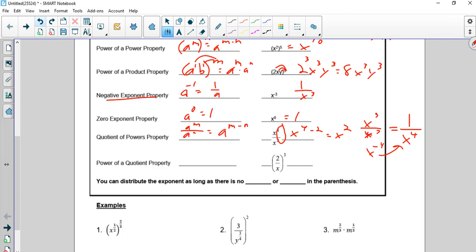Power of quotient. That's when you have a fraction being raised to an exponent. Basically it's just going to distribute. So I get a to the m over b to the m. So in this case, I get 2 cubed over x cubed, which is 8 over x cubed. And you can distribute the exponent as long as there is no plus or minus in the parentheses. So in other words, if I had x plus 5 squared, I cannot, not, not, not just do this. That's not right. That is wrong. That's why I put the big old no, don't do this. It doesn't work like that.